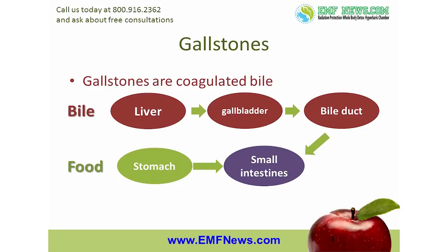Gallstones are nothing more than coagulated bile. Bile is the green alkaline liquid produced by the liver, which among other things helps us digest our food. The liver produces about a liter of bile a day and stores it in a muscular sac called the gallbladder. The gallbladder then squirts this bile down a tube called the common bile duct into the small intestines to mix with the food that comes from the stomach.